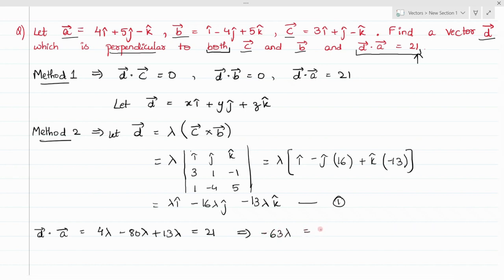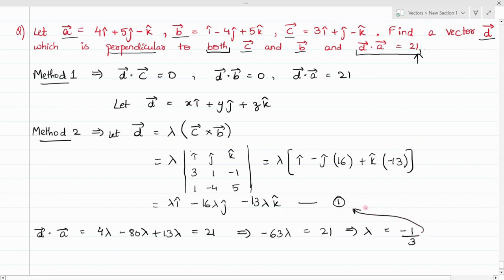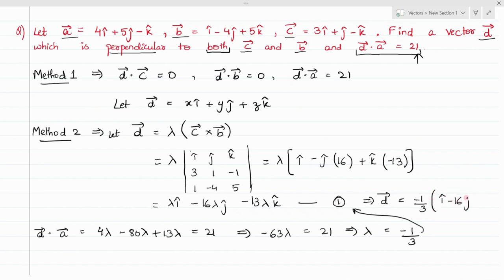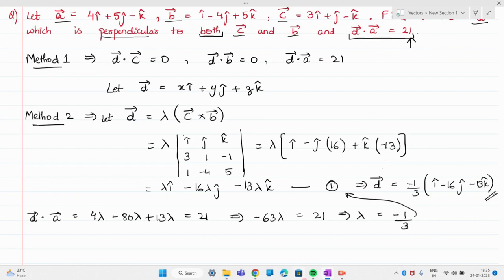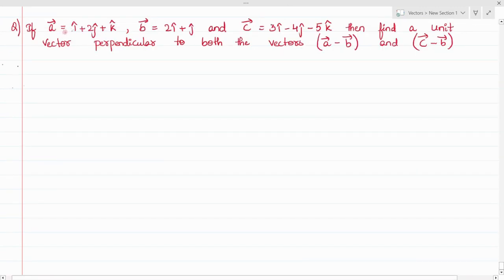Solving gives lambda equals minus 1 by 3. Substituting this lambda into equation 1, we get d vector as minus 1 by 3 times (i-cap minus 16 j-cap minus 13 k-cap). So this is the required d vector for this question.